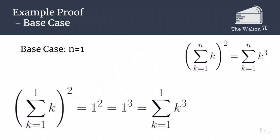So to begin we are going to start with our base case. Here we are going to start with the case n equals 1, so the sum from 1 to 1 of k is just 1.